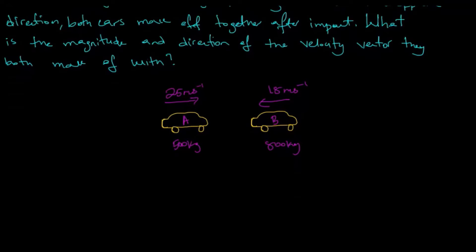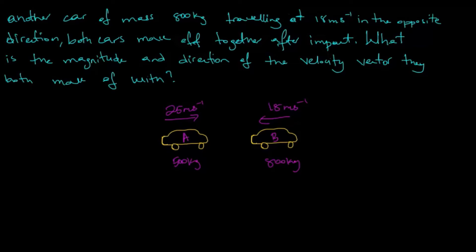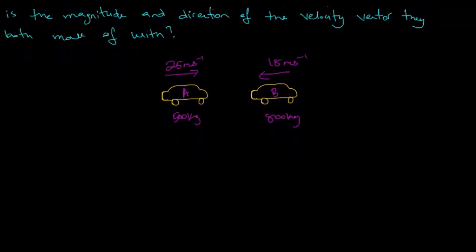Both cars collide with each other and then move off after collision. Since both cars have mass and move with some velocity, it means that each car has what is known as momentum, which is the mass of an object multiplied by its velocity. To consider a question like this, we can apply the conservation of momentum.